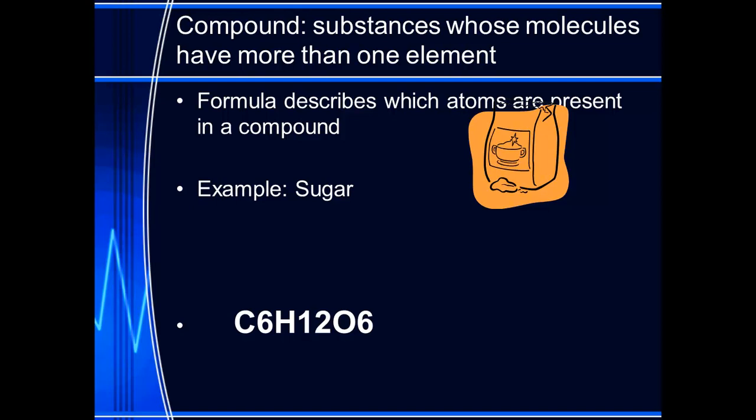I apologize, those should be subscripted, but this particular font will not do that. In your text, you can see the proper subscript of those number of atoms of certain elements in those compounds. Formulas describe which atoms are present in a compound based on the numbers in that particular combination. You've heard of H2O. H2 would be 2 of hydrogen and 1 of oxygen. That's what makes up water.